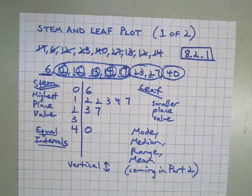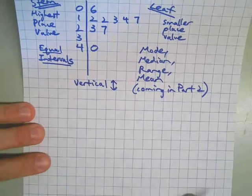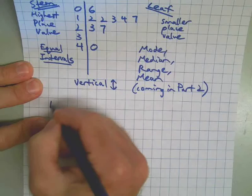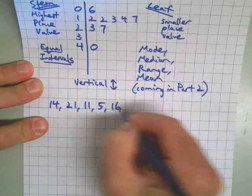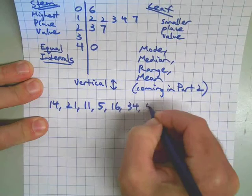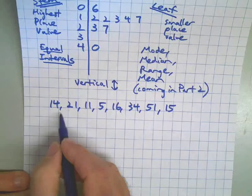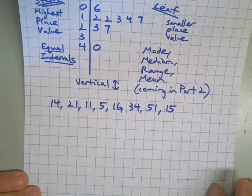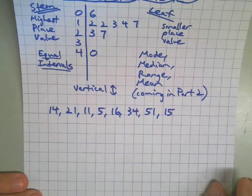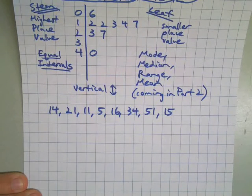That's it. Let me give you a sample problem. And then you can make your own, and I'll give you the answer. So here's a number list for you. 14, 21, 11, 5, 16, 34, 51, and 15. Go ahead and do this problem, and I'll come back in part two of the video with the answers. Thank you.